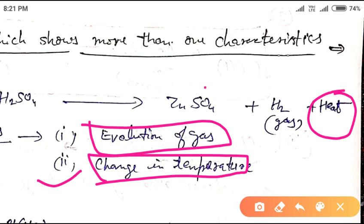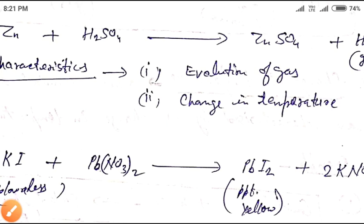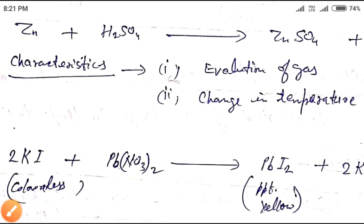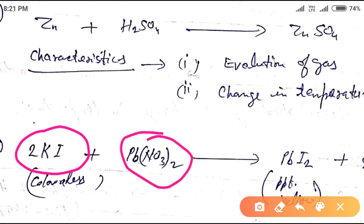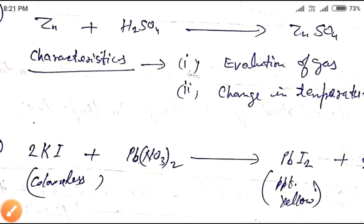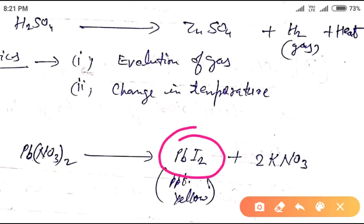In another example, when potassium iodide (KI) reacts with lead nitrate solution, it produces lead iodide as well as potassium nitrate.